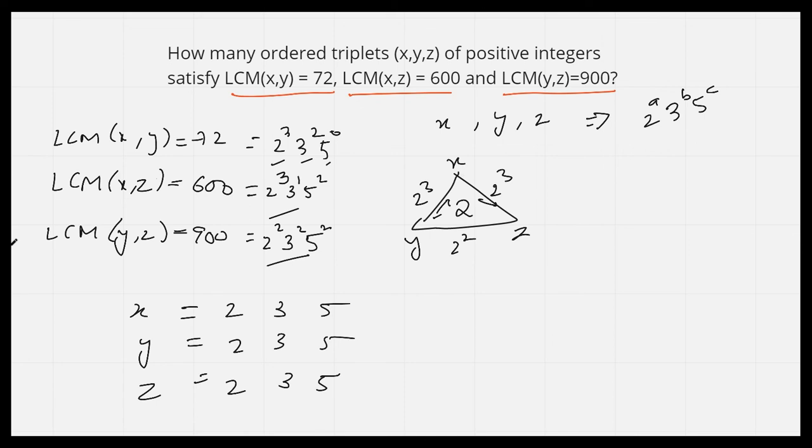From here we can conclude that x has the power of 2 as 3. If either z or y had power of 2 as 3, then the LCM(y,z) would also have been 2³, but it is 2². We cannot say anything specific yet for y and z individually, only that together they account for 2².